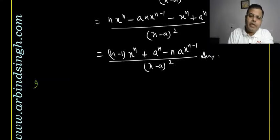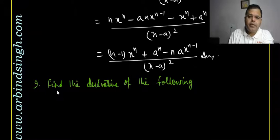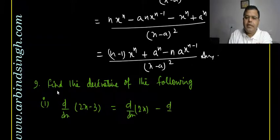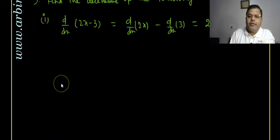Now let us discuss question number nine. There are several parts. The first part is to find d/dx of (2x − 3). We get: d/dx(2x) − d/dx(3) = 2 · (dx/dx) − 0 = 2. So the answer to the first part is 2.